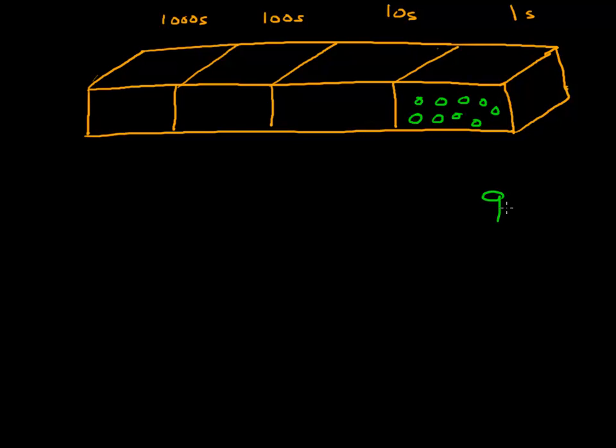But when we get to 9, we've run out of numbers. We don't have another number beyond 9. So what we do is we say, if we put just one ball in this box, that will represent 9 plus 1, which we know is 10, we've given it a different name.